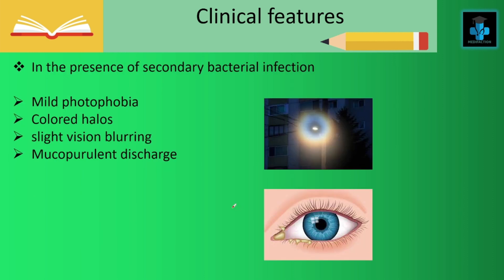Whereas in the presence of secondary bacterial infection, the symptoms may differ. There will be mild photophobia or colored halos, slight vision blurring, and since there is a bacterial infection, there will be mucopurulent discharge.